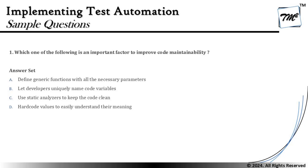The very first option says: defining generic functions with all the necessary parameters. While this is a good approach, defining functions with all necessary parameters helps us achieve library functions rather than improving code maintainability. It would help reduce effort in writing the test automation script but does not particularly help to improve code maintainability.